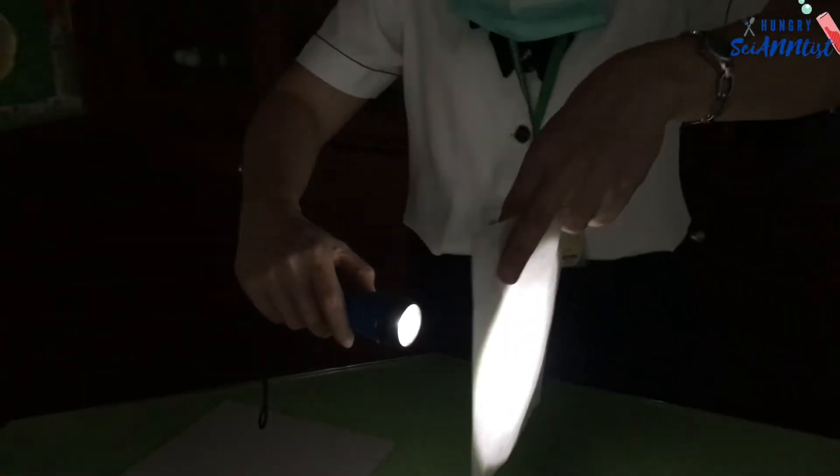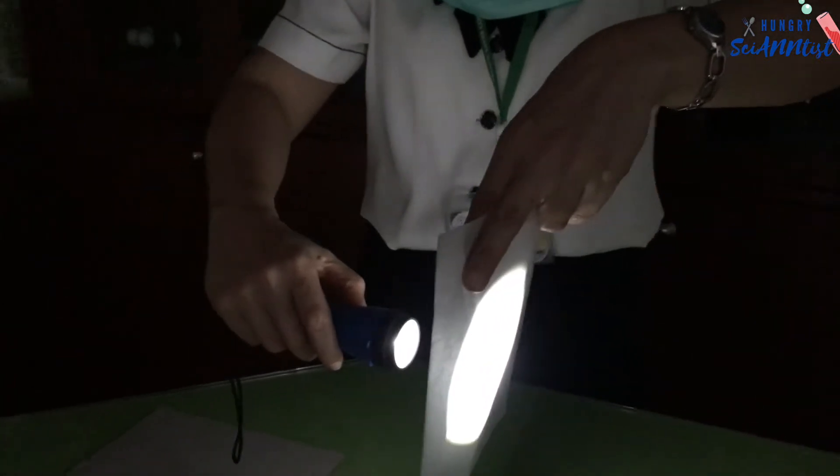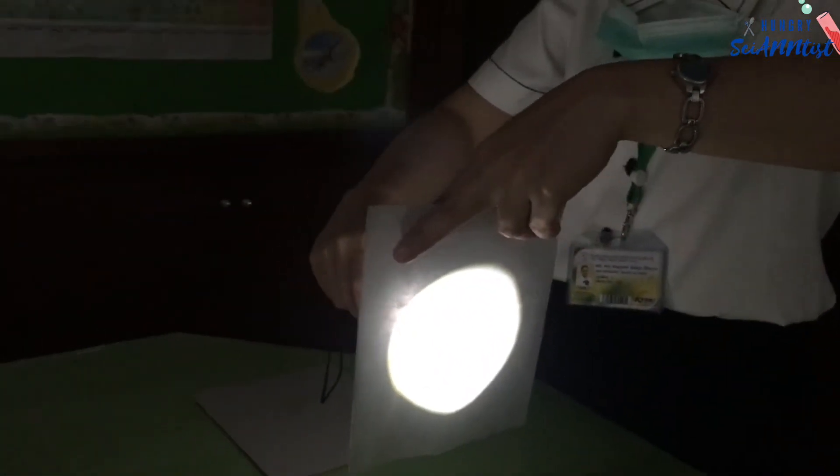Translucent objects cast faint shadows as they block light partially.